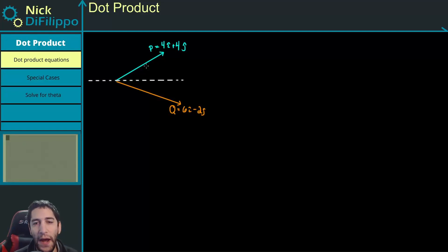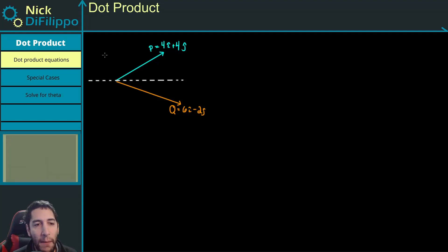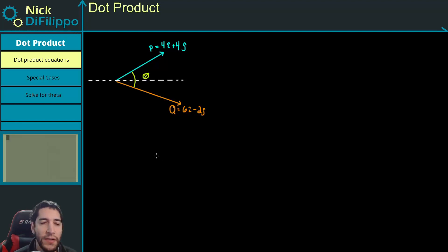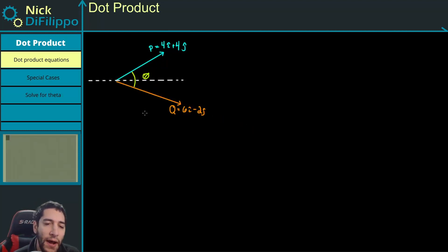In this video, I want to go over what the dot product is and how it can be applied to 2D systems. What I'm going to cover can be extended to 3D systems, and I'll put a video out later where I actually do this with a statics problem. But I want to start off a little easier. With the dot product, a common thing we're asked to find is the angle between two vectors. Another thing we can be asked to find is, if we have some line, how much does this vector project onto a certain line? Those are two things that are commonly asked to find with the dot product.